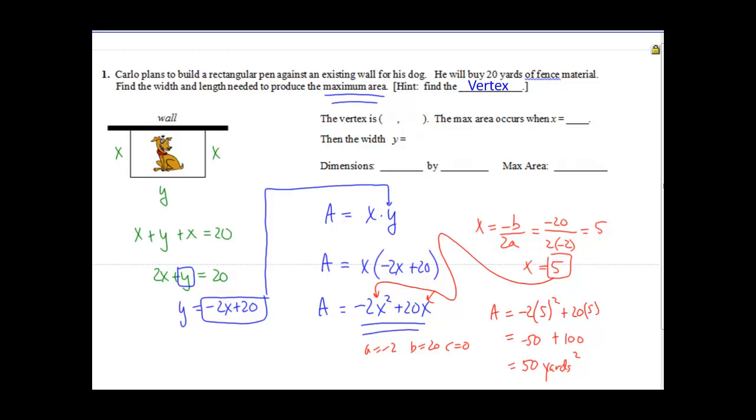So if we go back up, what was the vertex? Well, we really just got the X coordinate and then we plugged into our equation. So actually, if you remember, the A is really the Y, so our vertex is 5 comma 50. So the max area occurs when X is equal to 5.